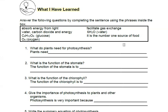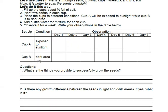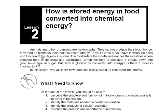Moving on, you answer What I Have Learned. Again, answer the following questions by completing the sentence using the phrases inside the box. So what do plants need for photosynthesis? Plants need blank, blank, blank, blank. So complete the sentence. So this one you copy and answer.